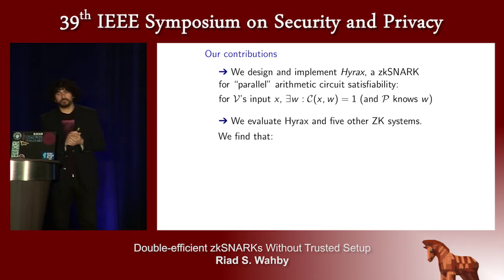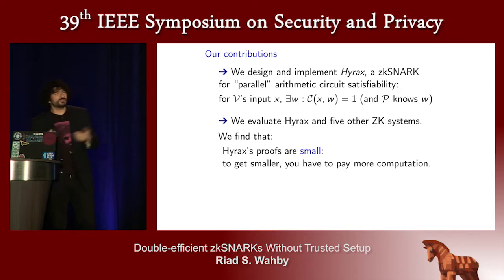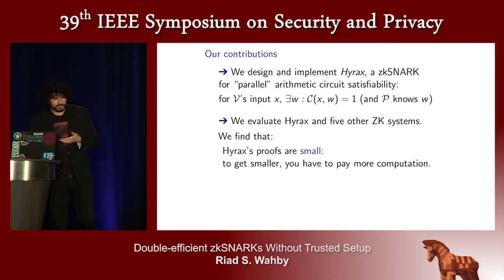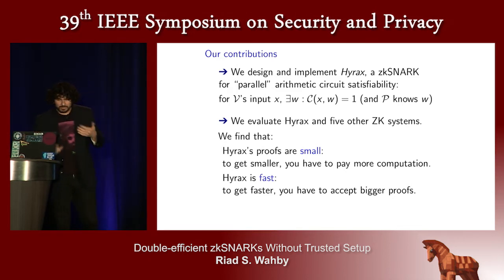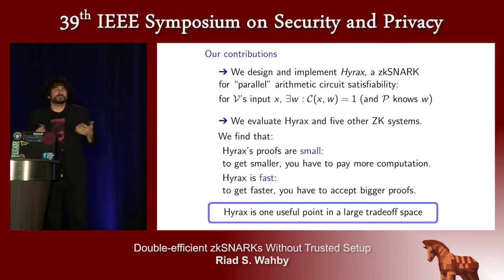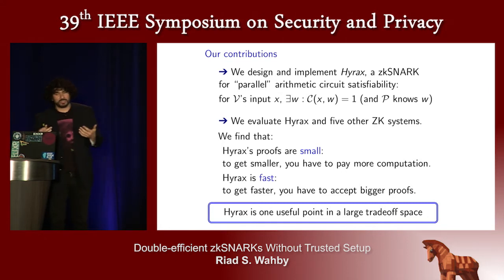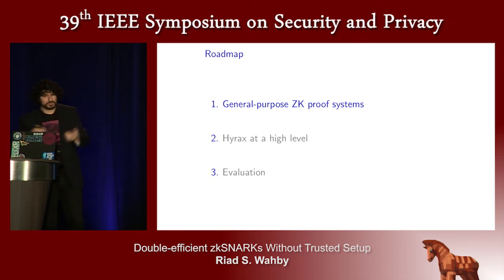We did a careful comparison with five other zero-knowledge proof systems. The upshot is that Hyrax gives small proofs in the sense that if you wanted to make the proofs smaller, you'd pay for it by making the verifier or prover slower. And it gives fast proofs in the sense that if you wanted to make them faster, you'd pay by making the proofs bigger. This is a big design space, and the answer to which is best is that there isn't one — we're trying to figure out which proof system is best for a given application. Let's look at this design space of general-purpose zero-knowledge proof systems, and then come back to Hyrax's design and evaluation results.